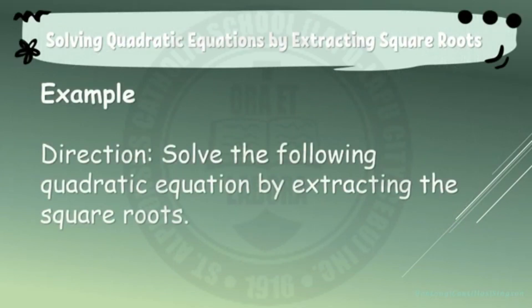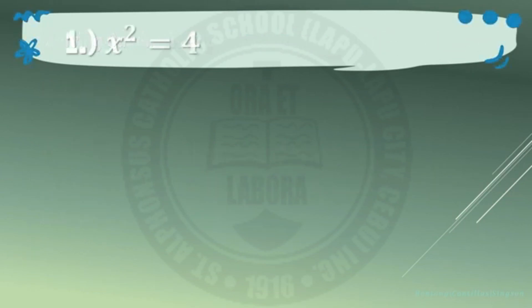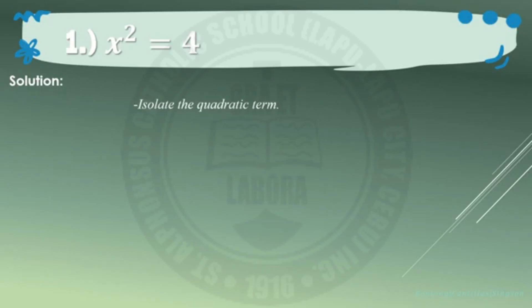Let's have some examples. Solve the following quadratic equations by extracting square roots. Example number 1: x squared equals 4. Solution. First, you need to isolate the quadratic term. Remember that the quadratic term is in the form of ax squared. And obviously, in example number 1, it is already isolated.